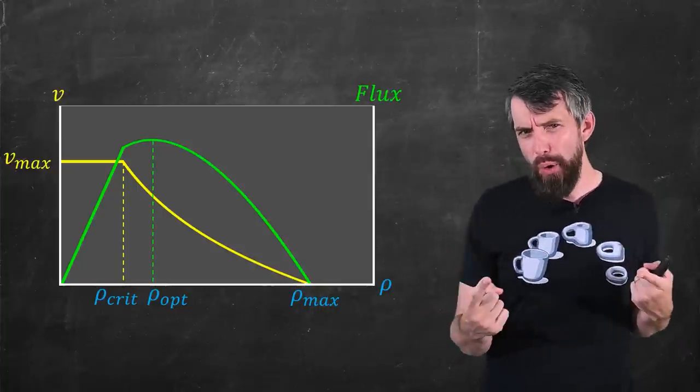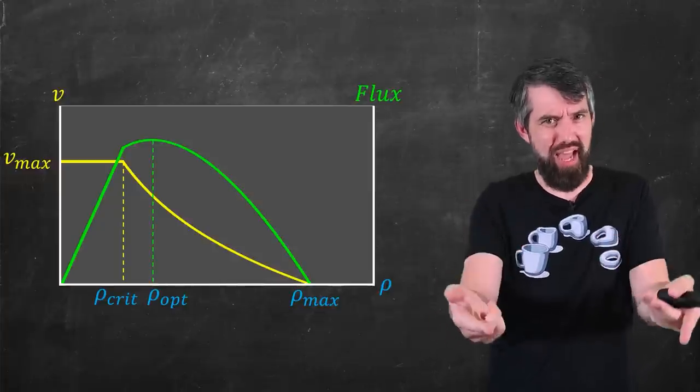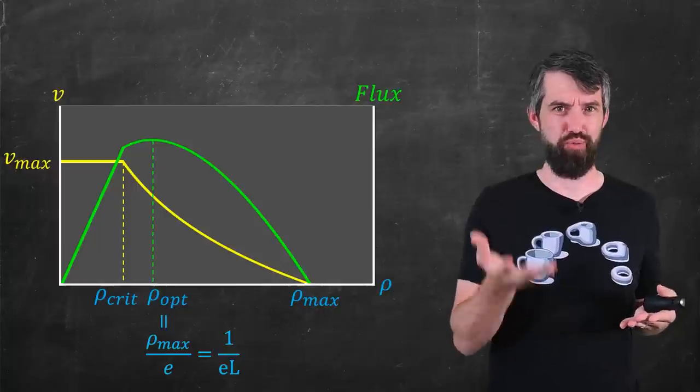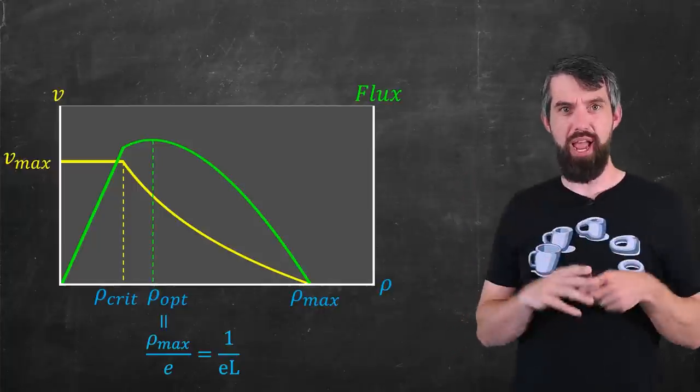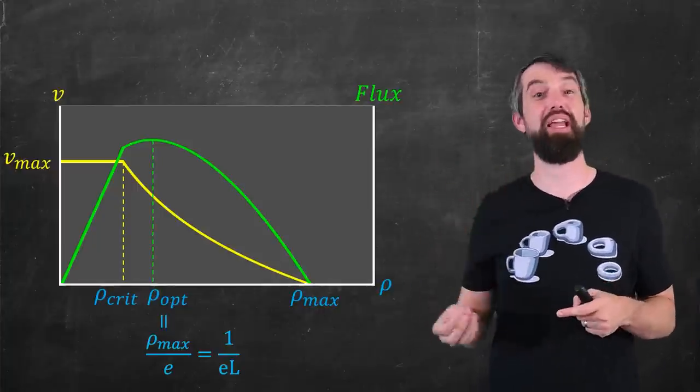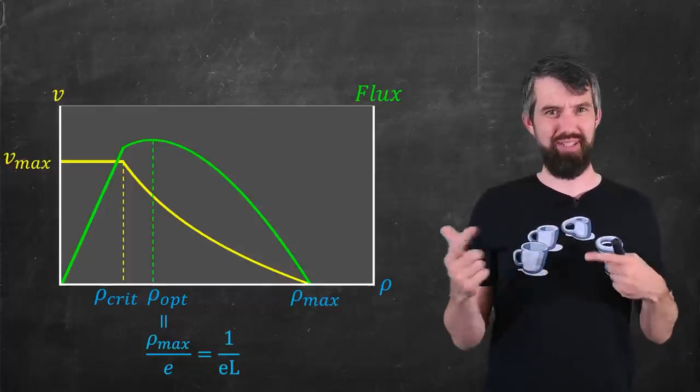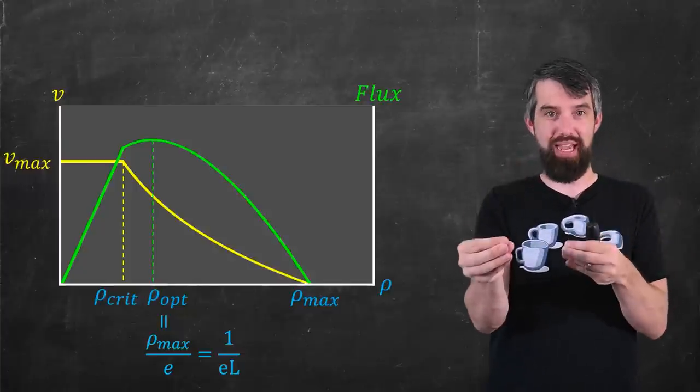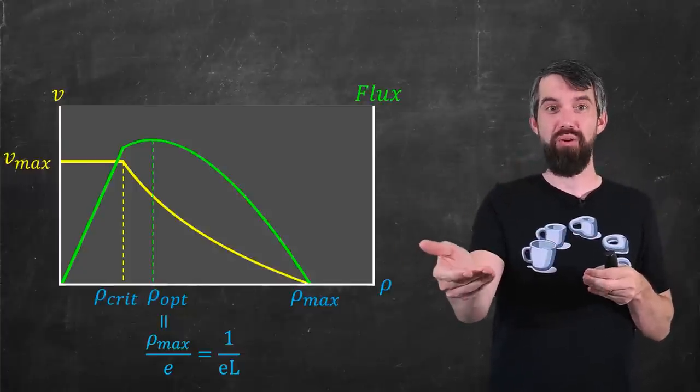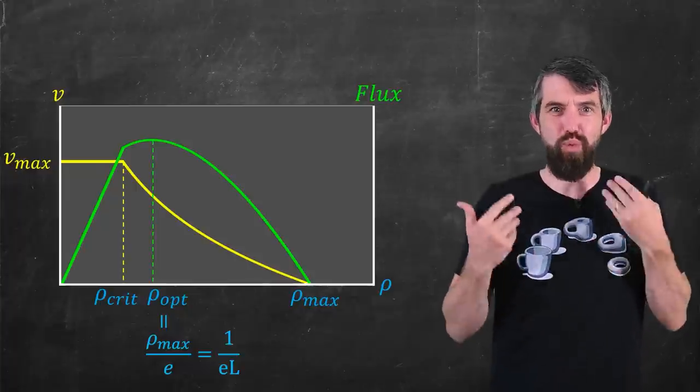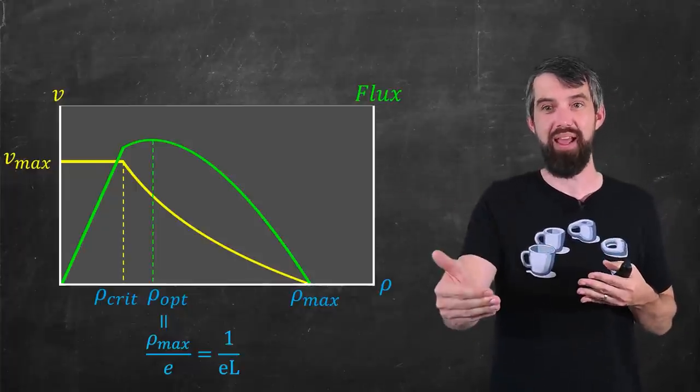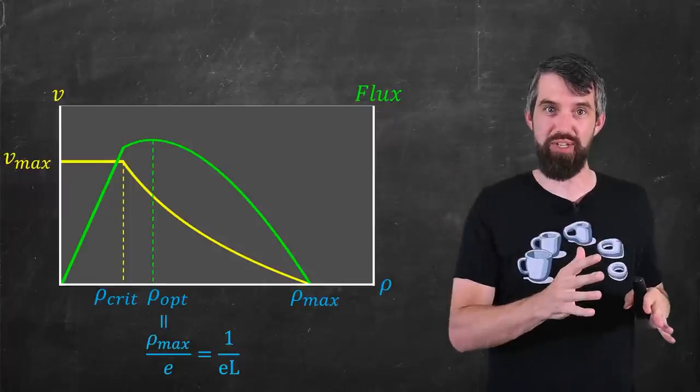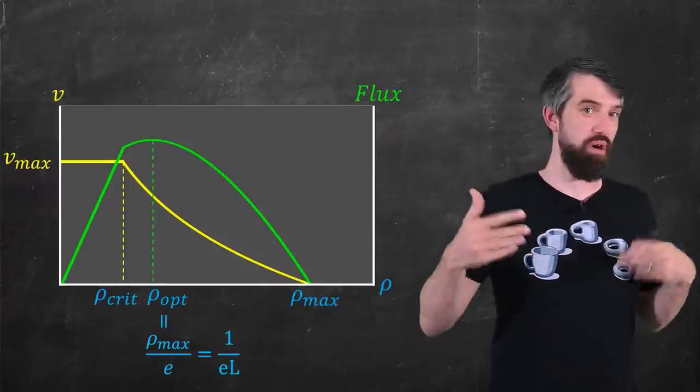You might think, how do you know the optimal density is to the right of the critical density? Well, remember how we said the optimal density was ρ_max divided by e, and ρ_max was just one over the length of a car? So this optimal density is when you're traveling actually with less than two car lengths behind the car in front of you, which is a density that I think for most of us we wouldn't be comfortable driving at a maximum speed at. So probably this optimal density is to the right of the critical density, which is when you start slowing down from your maximum velocity.